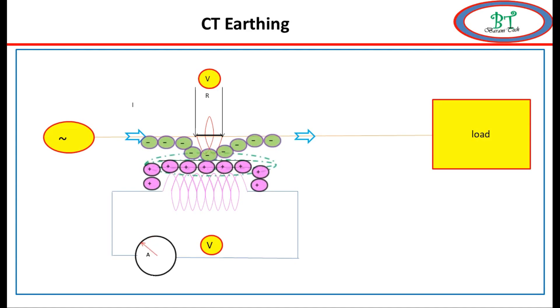When we make this earthing, all capacitance charge will be discharged through the earthing, but the CT secondary current will not take this path.